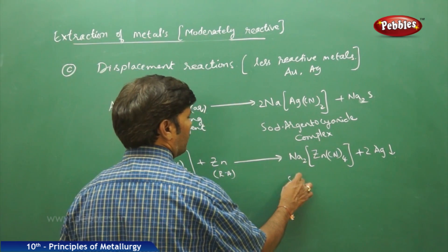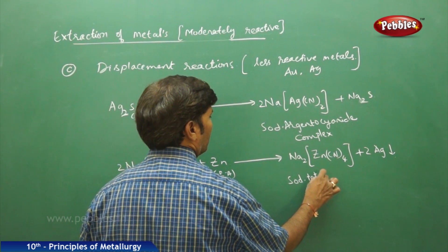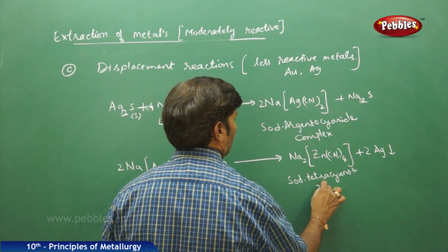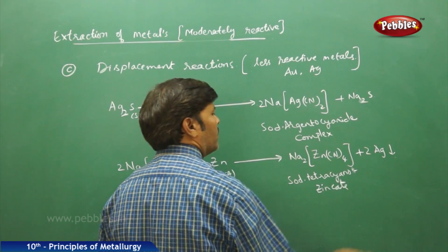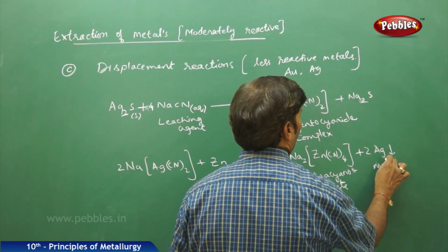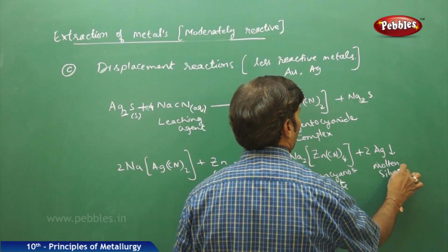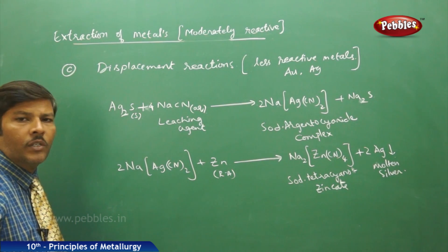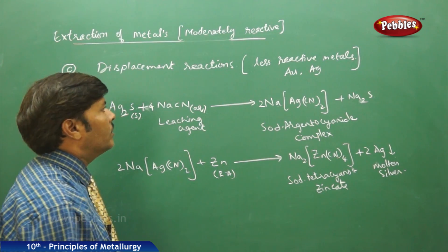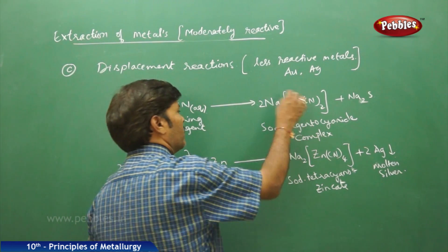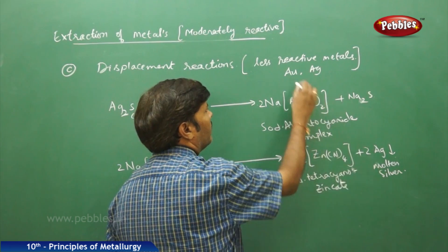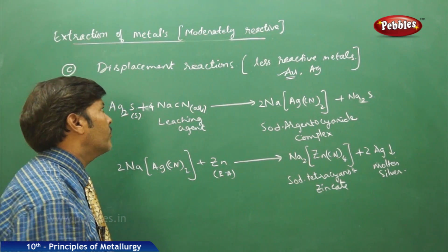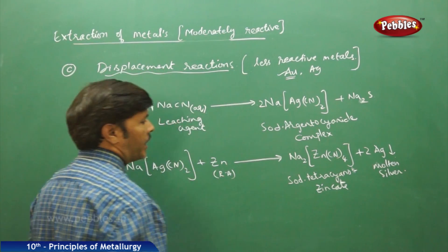The product is sodium tetra cyanoargentate and the metallic silver obtained is molten silver. This is one of the best examples of a displacement reaction for extraction of less reactive metals — copper and silver. The same method applies to the extraction of gold as well. Gold and silver both follow the displacement reaction method.